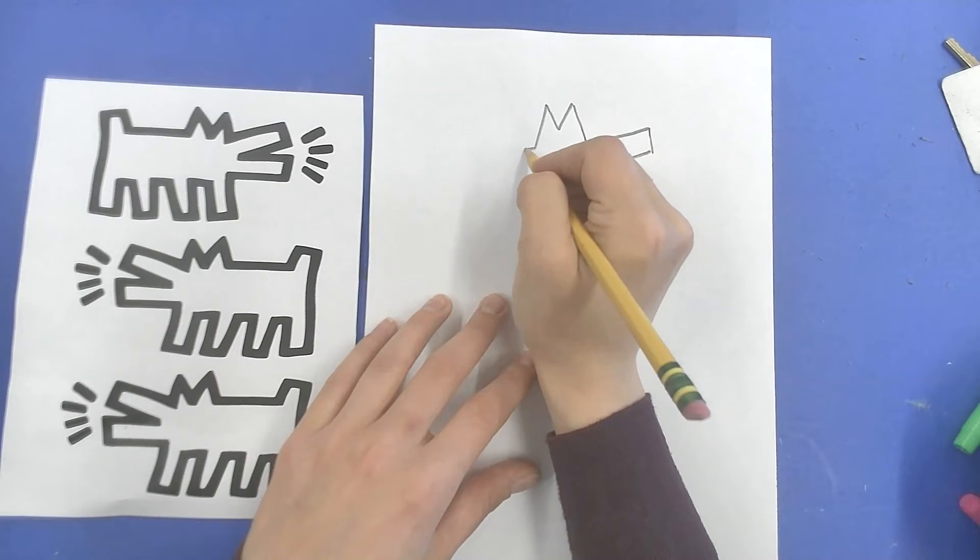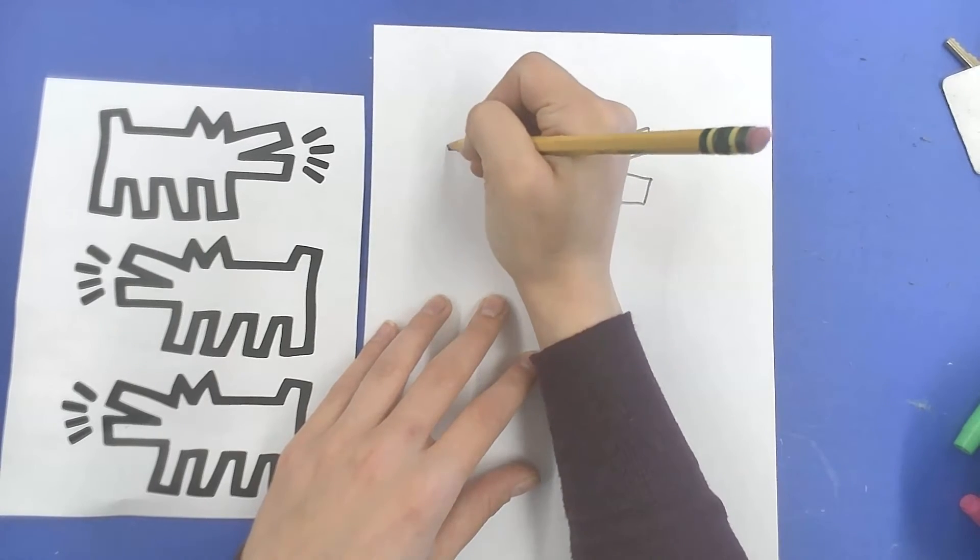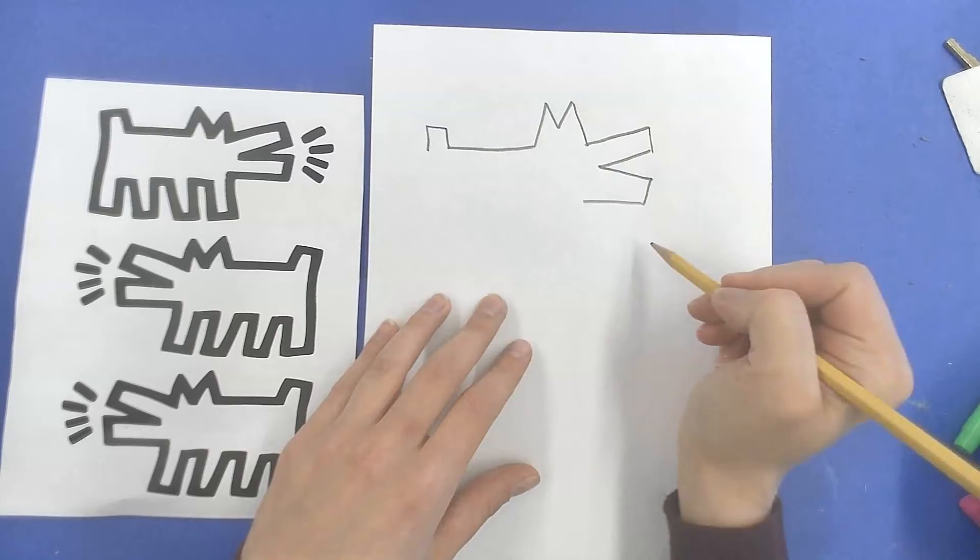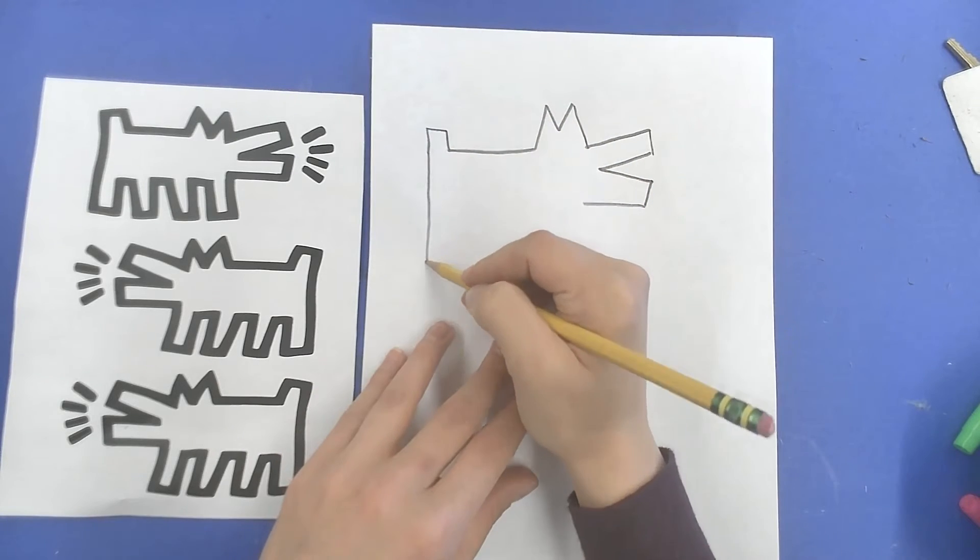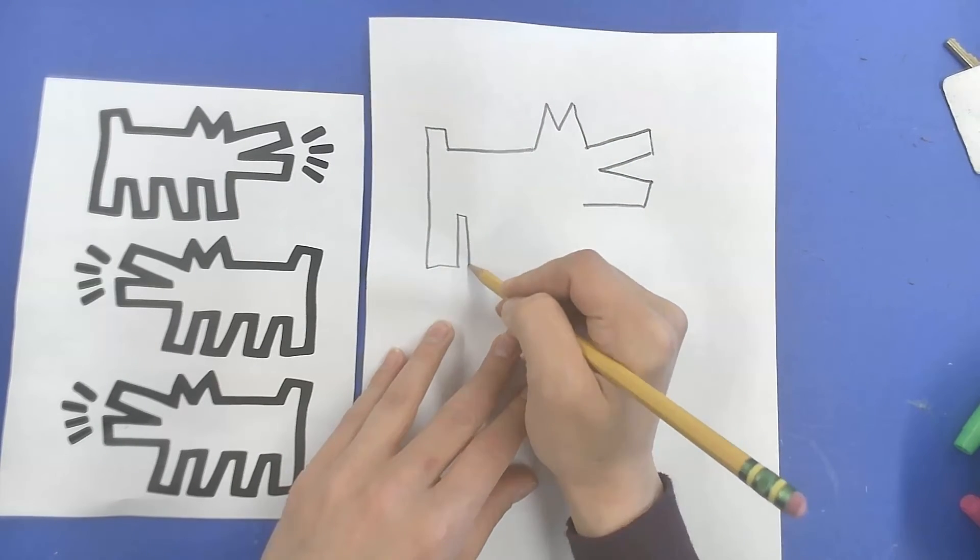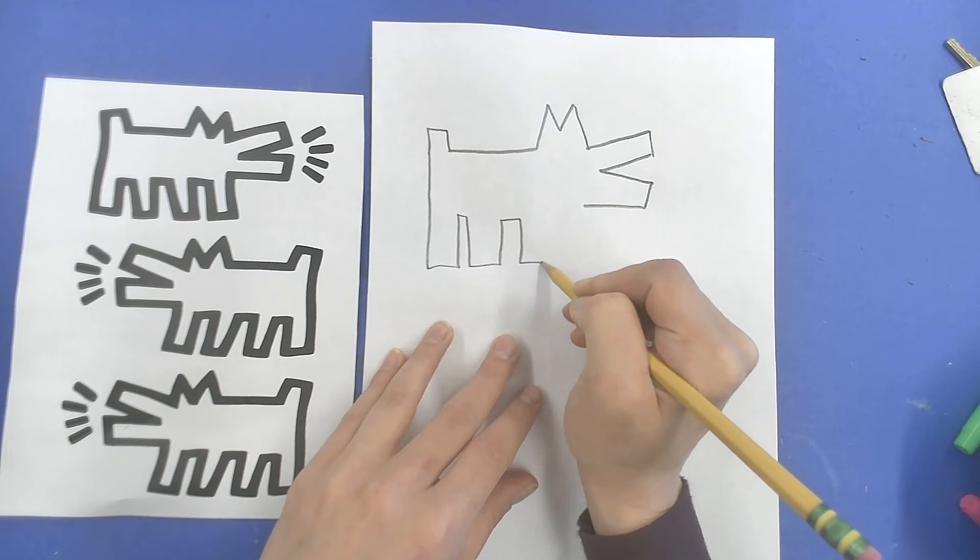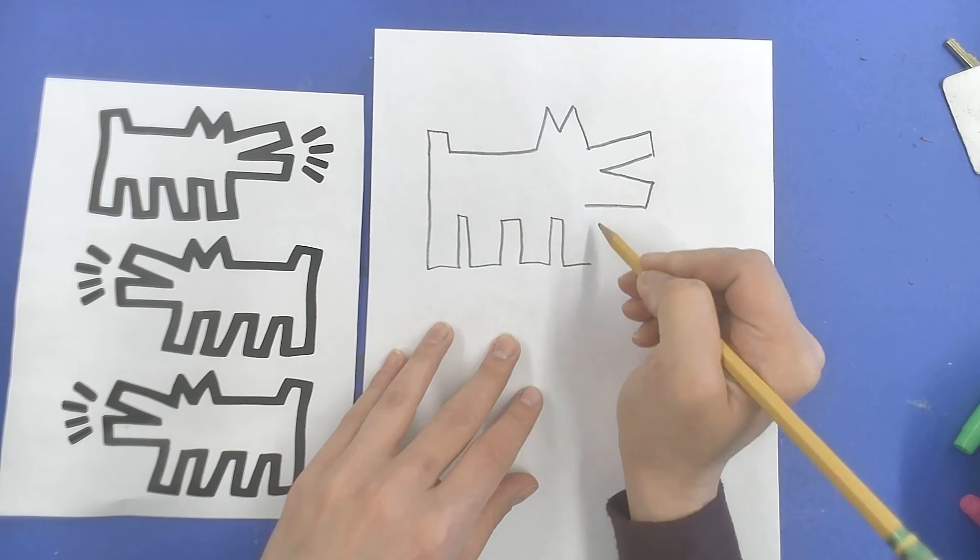Then we draw his back, straight line, little nubby for the tail. And then we fill in the rest with four rectangles. One, two, three, and four. Dogs are very simple.